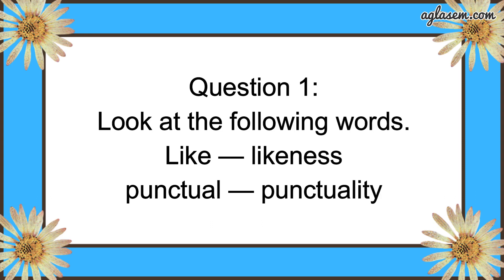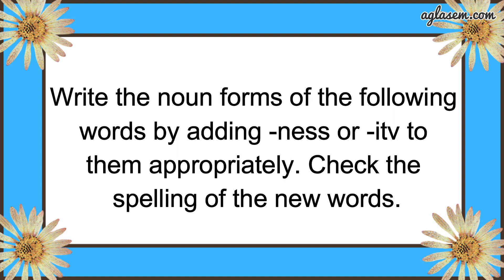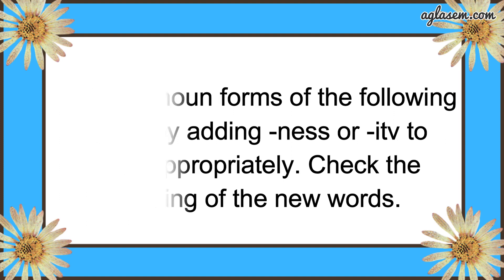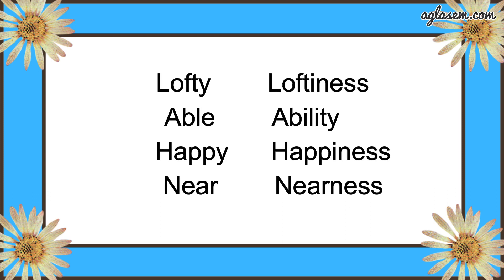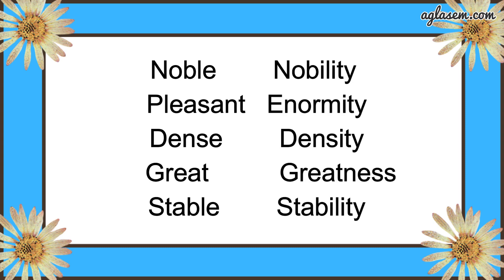Moving to 'Working with the Language.' We have to write the noun forms of the following adjectives by adding '-ness' or '-ity'. The answers are: lofty — loftiness; able — ability; happy — happiness; near — nearness; noble — nobility; pleasant — pleasantness; dense — density; great — greatness; stable — stability.